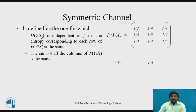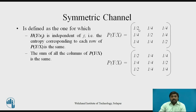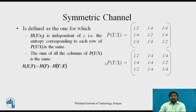Let us see an example. Two conditional probability matrices are given, each having three rows and three columns. For the first condition, if you find the entropy of each row as the average summation, you get the same value for both examples — so both satisfy the first condition. For the second condition, checking the column sums: the first matrix gives the same column sum values, while the second does not. Therefore only the first matrix is a symmetric channel matrix.